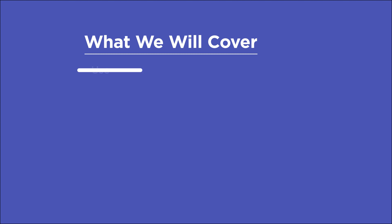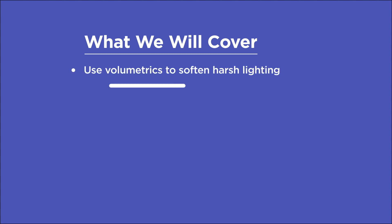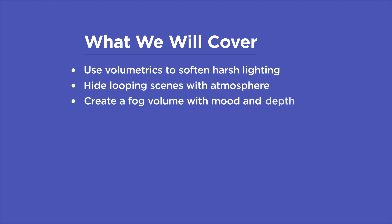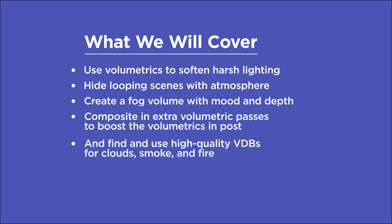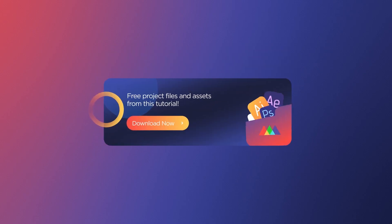In this video you'll learn to use volumetrics to soften harsh lighting, hide looping scenes with atmosphere, create a fog volume and tweak settings to add mood and depth, composite in extra volumetric passes to boost the volumetrics in post, and find and use high quality VDBs for clouds, smoke and fire. If you want more ideas to improve your renders make sure to grab our PDF of 10 tips in the description.